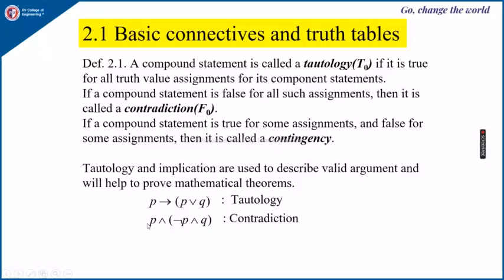Next is contradiction: P AND (NOT P) AND Q. For any values of P and Q, this compound statement will be false, because either P will be true and NOT P will be false, so the AND of these will be false.